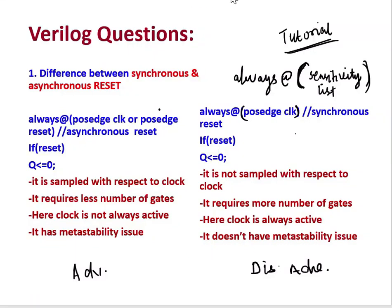The first question is the difference between synchronous and asynchronous reset. We know that there are two types of procedural blocks: the always block and the initial block. Synchronous and asynchronous reset is related to the always block.